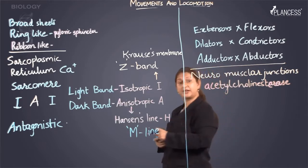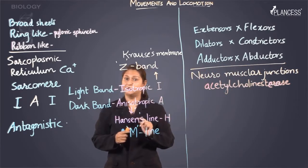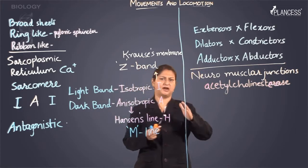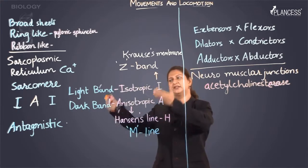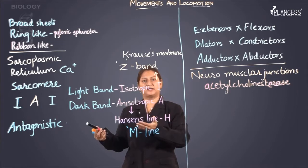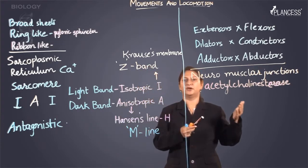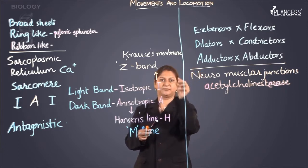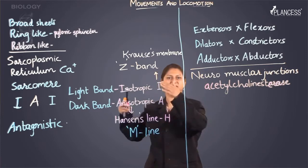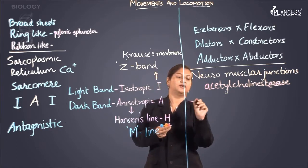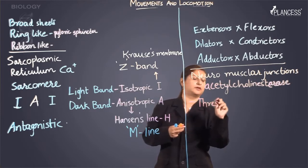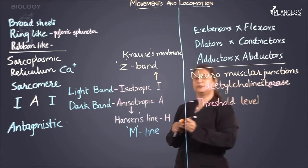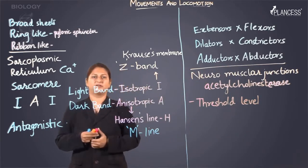Acetylcholine esterase is the chemical that excites the muscles to carry the process further. Once the excitation is done, the remaining part is taken over by the light bands and dark bands, which carry the work further. The initial thrust or force that initiates the process is called the threshold — the threshold level which brings about the first chain of reactions.